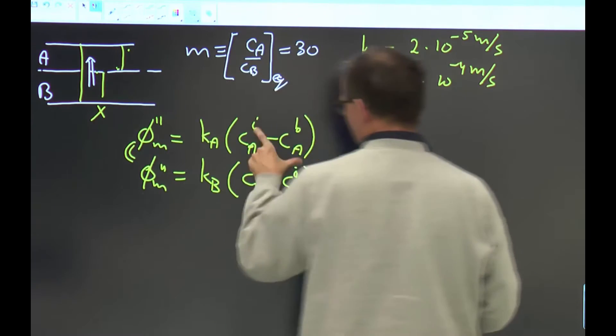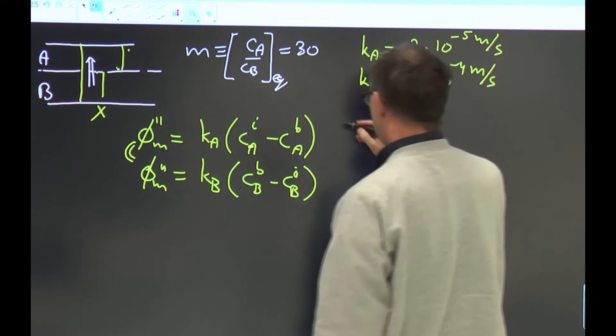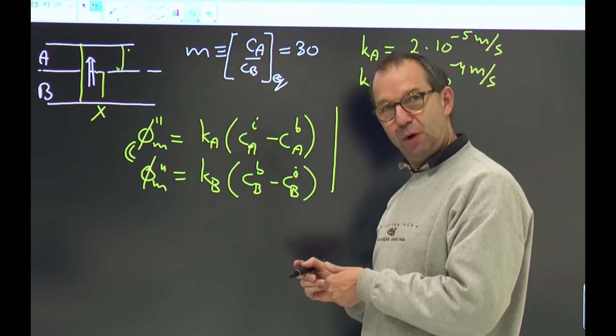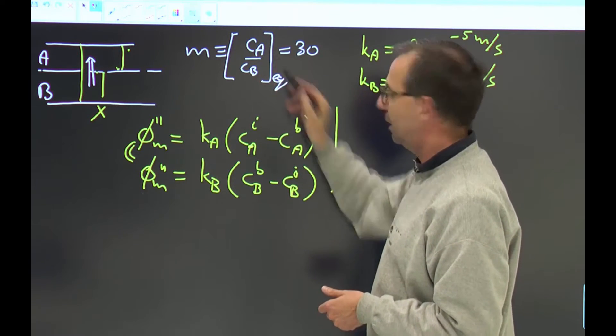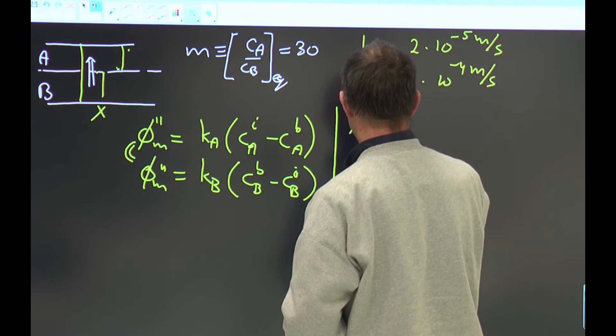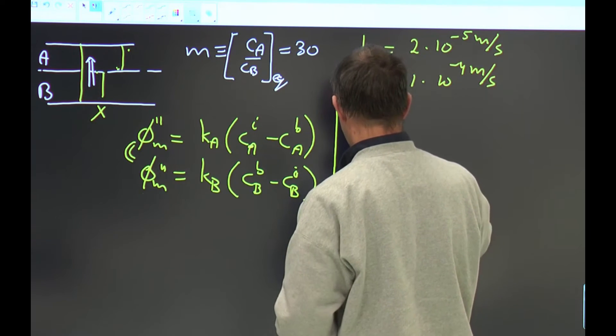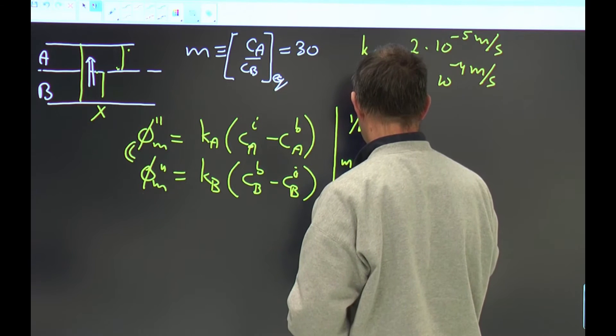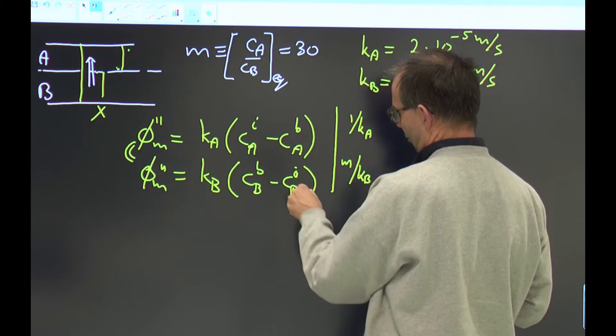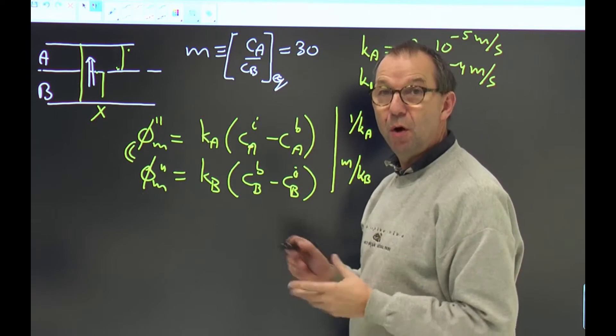The problem is that I have these two interface concentrations which bug me. I have no idea what they are; I only have the concentrations in the bulk. But I can get rid of them by using that at the interface, instantly on the scale of transport phenomena, these two obey the equilibrium relation. So I'm going to multiply the above equation by 1 over kA—that brings effectively that coefficient to the other side—and on this side I multiply by M over kB. That brings the kB away but also makes that here M times the concentration in the B phase can be cancelled against 1 times the concentration in A on the interface.